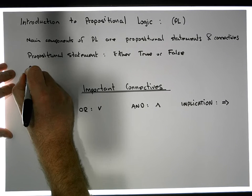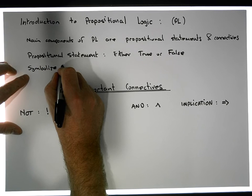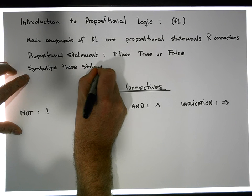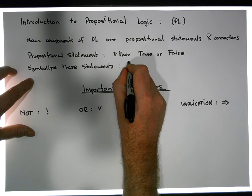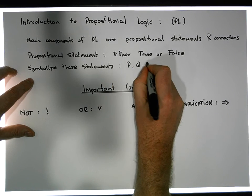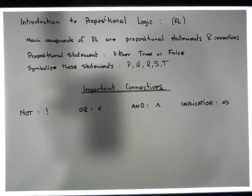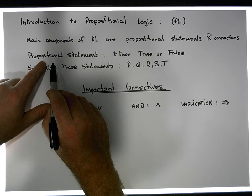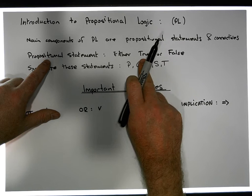We usually symbolize these statements by variables. The variables are usually P, Q, S, and T, and so on — the latter end of the alphabet. But the most important thing is a propositional statement is a statement that propositional logic deals with — statements that are either true or false.